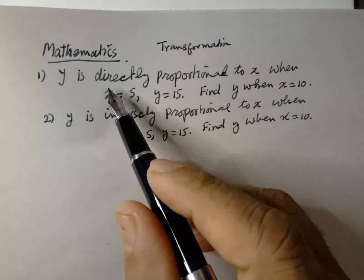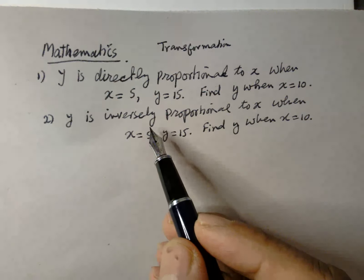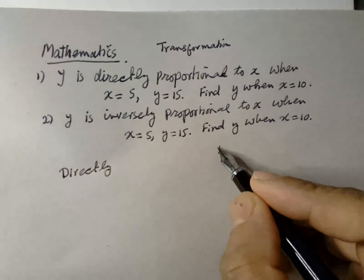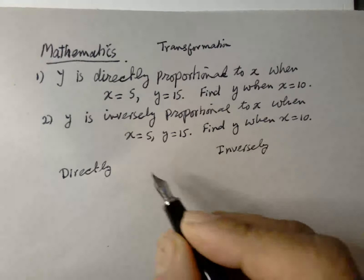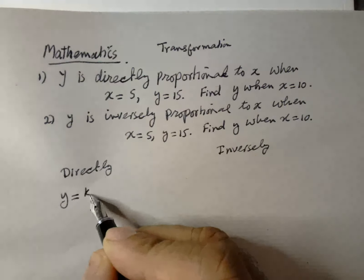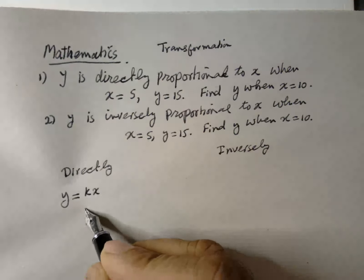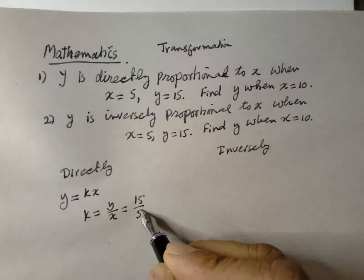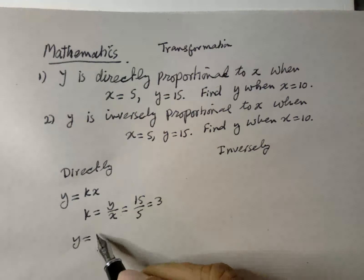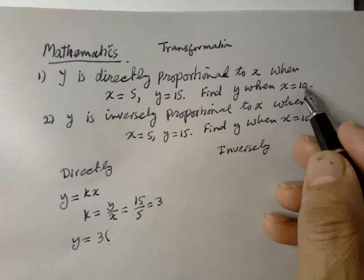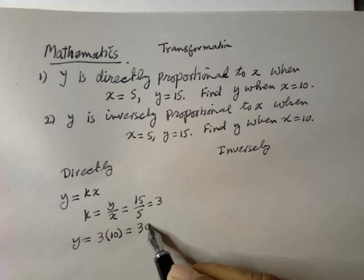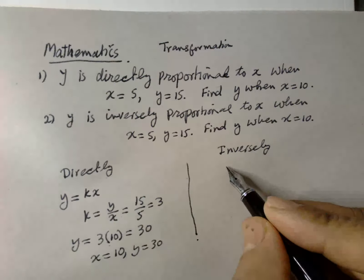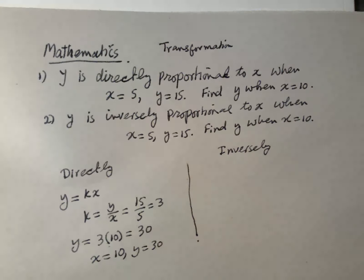In the first case y is directly proportional, and in the second case it is inversely proportional, and we have to find the values. So for direct proportion, y is equal to kx, so k is equal to y over x. So k is 15 over 5, which equals 3. So y is equal to 3x, and when x is equal to 10, y is equal to 30. So when x is equal to 10, y is equal to 30 when it's directly proportional.